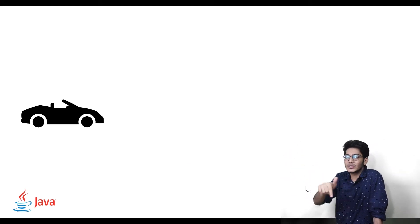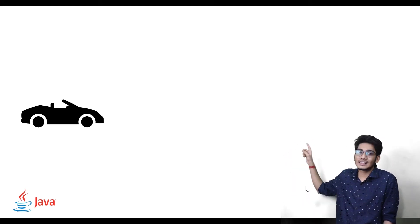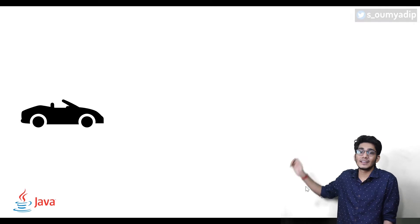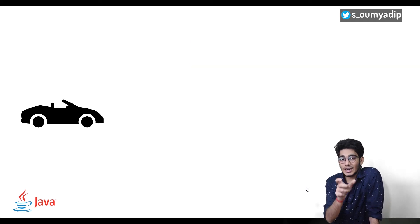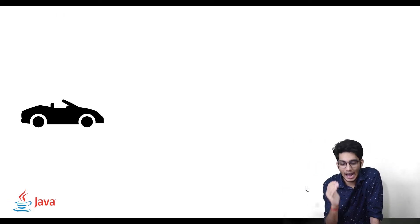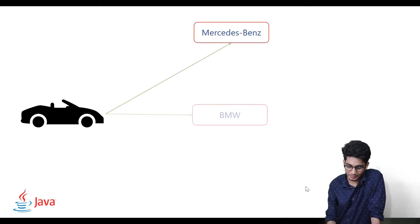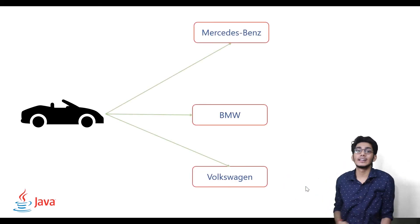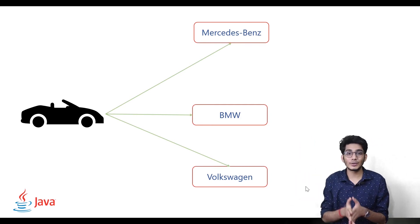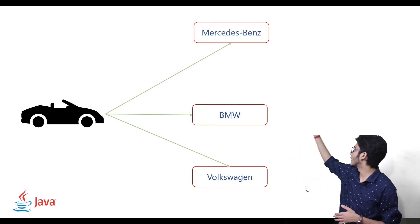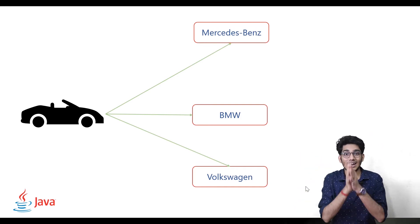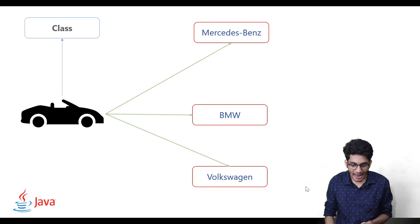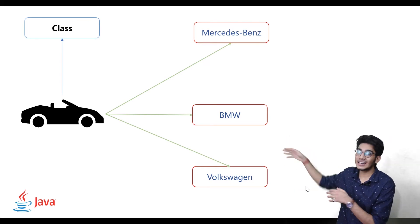As you can see on my screen, I have 'car' — write in the chat whether this car has any real-life existence or not. We can treat 'car' as a class. When someone asks about the car, you have to mention which type: it could be a Mercedes, a BMW, a Volkswagen. From this diagram, Mercedes, BMW, and Volkswagen are the objects, and 'car' is the class.